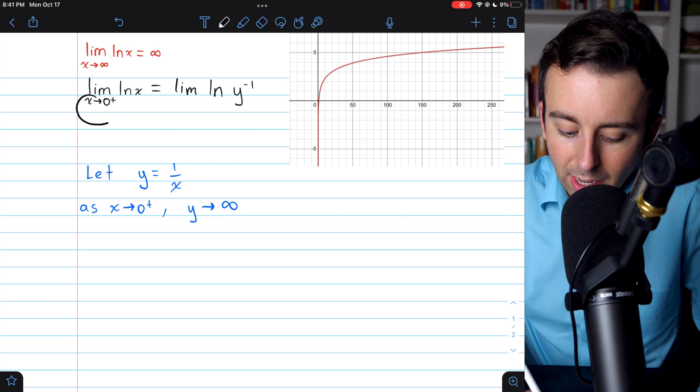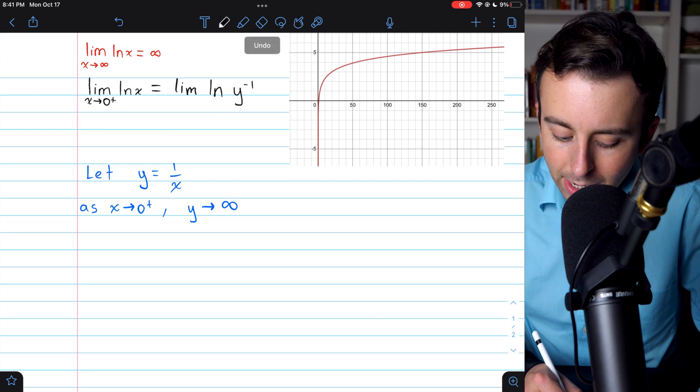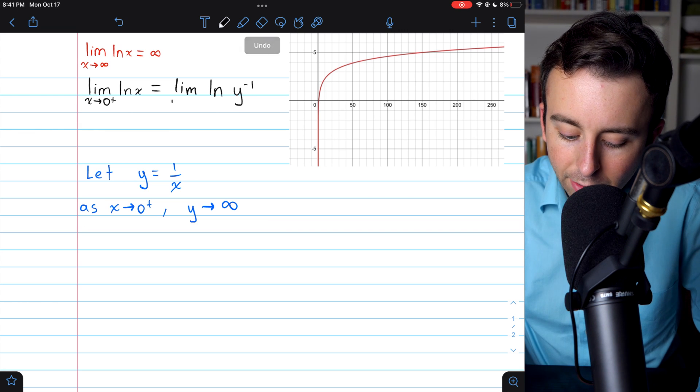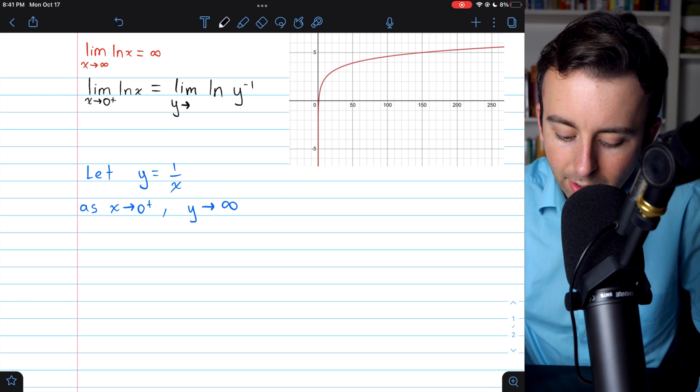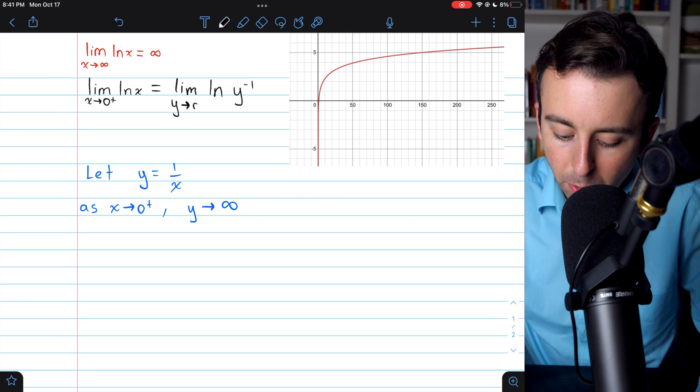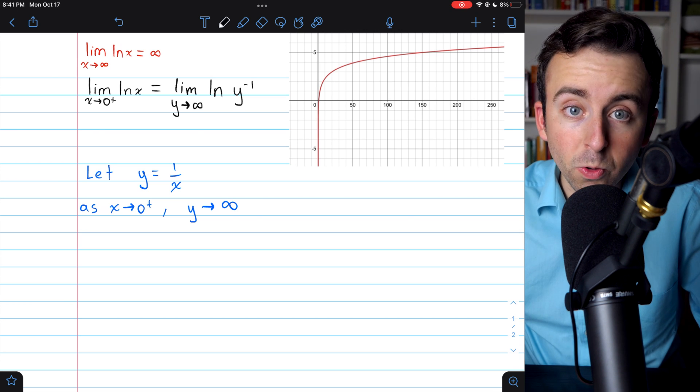And then of course, instead of x approaching 0 from the right, we'll write that y is approaching infinity. Since as x approaches 0 from the right, y is approaching infinity.